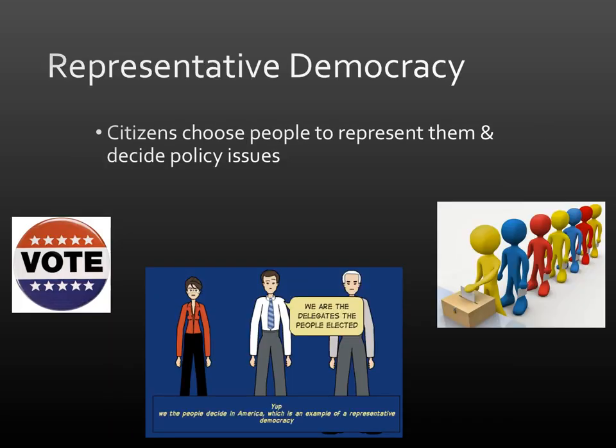On the other hand, in contrast with direct democracy, we also have representative democracy. This is where citizens choose people to represent them and decide policy issues. This is like the idea of the U.S. being a republic. People vote for somebody to go to Congress, to the House, to the Senate, and those people will represent them and vote on the policies. It is their duty to represent the people who voted them into office.